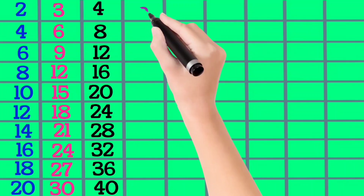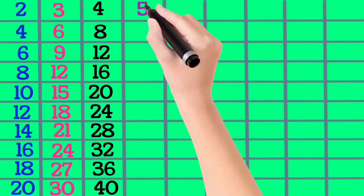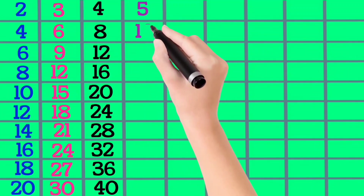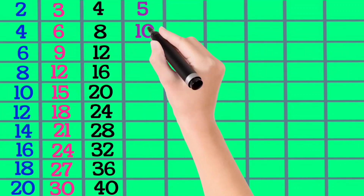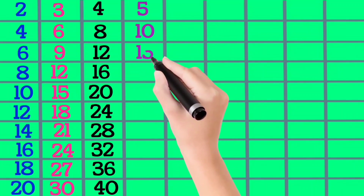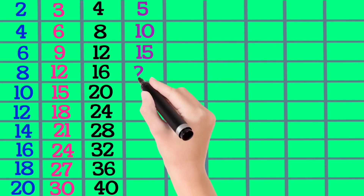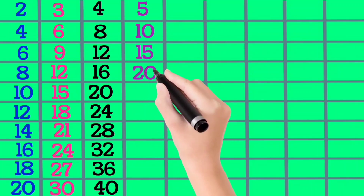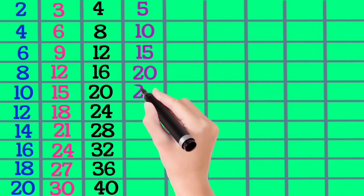5×1 is 5, 5×2 is 10, 5×3 is 15, 5×4 is 20, 5×5 is 25.